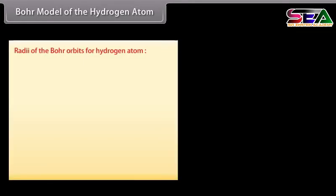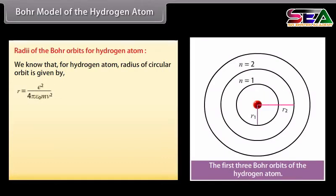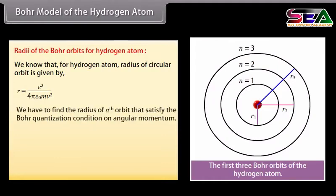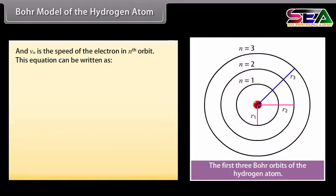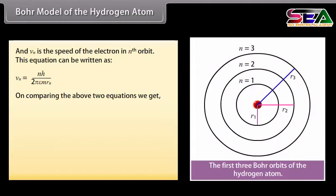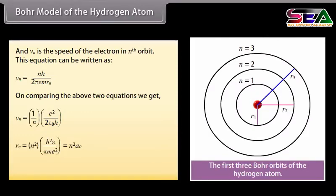Radii of the Bohr orbits of hydrogen atom: The radius of the circular orbit is given by E²/(4πε₀mv²). Applying the Bohr quantization condition on angular momentum, Ln = mVnRn = Nh/2π, where N = 1, 2, 3, ... and Vn is the speed of the electron in the Nth orbit. Solving gives: Vn = (1/N) × E²/(2ε₀h), and Rn = N² × h²ε₀/(πmE²) = N²a₀, where a₀ = 0.529 Angstrom.